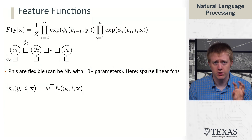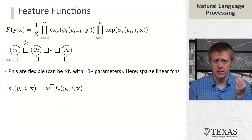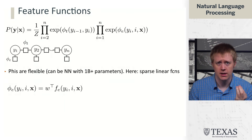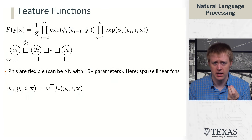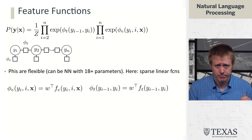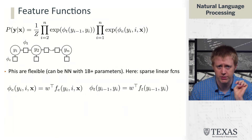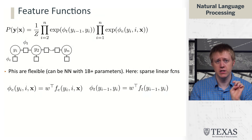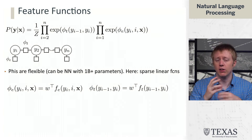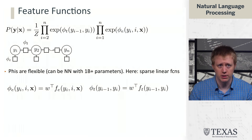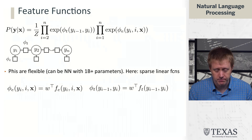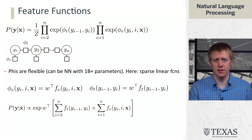These are going to extract features based on the arguments to each of these things. The emissions are going to look at the current tag yi, the position i, and the overall sequence x. The transitions are going to look at only an adjacent pair of tags yi-1, yi. You could have transition features that look at x as well and are generally more involved, but we're not going to do that. Once we specialize the CRF to this case, we get this formula.